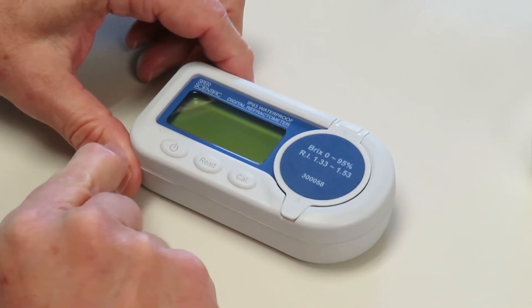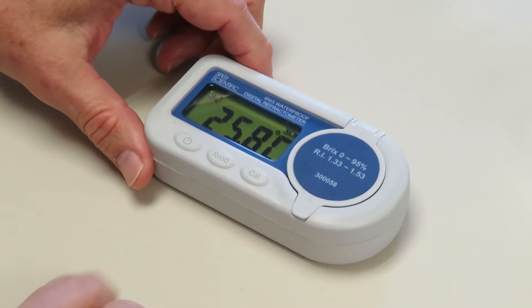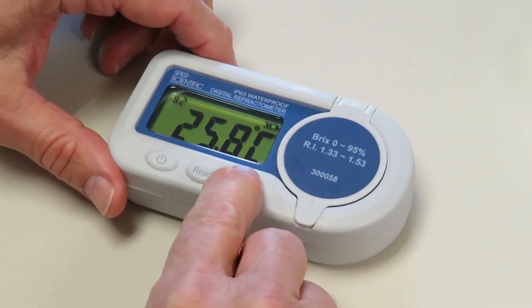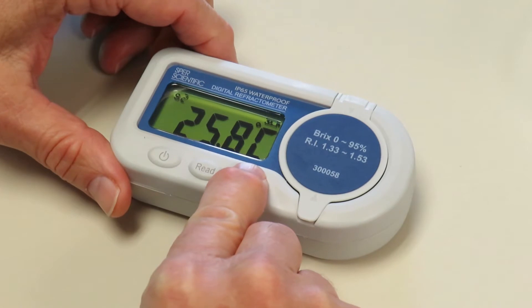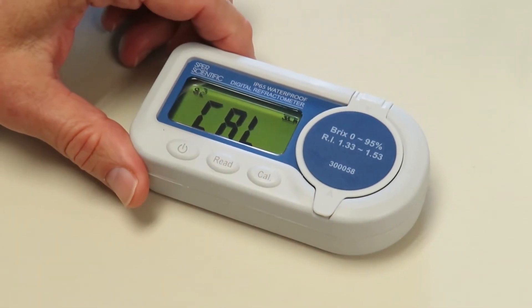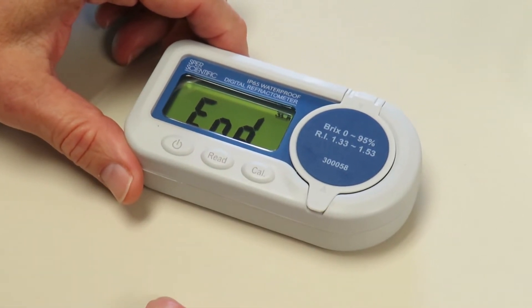Then we turn the unit on, and the first thing it does is it shows us the temperature of the sample, and now we calibrate it by holding down the calibration button for a few seconds. And once we see the words Cal, we know that we've calibrated it to zero, which is distilled water.